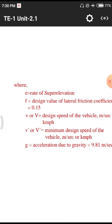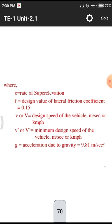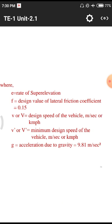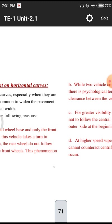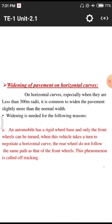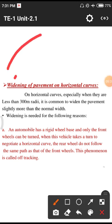To clarify terms: E equals super elevation, F equals friction coefficient. The primary letters E and F denote these two terms. Velocity in km/h is shown as capital V; in m/s it is small v. G is acceleration due to gravity equal to 9.81 m/s². Next, we discuss widening of pavement on horizontal curves — that is, enlarging the pavement for a particular span.